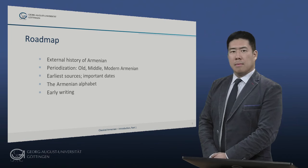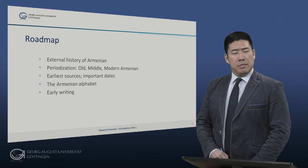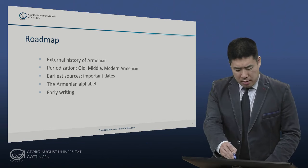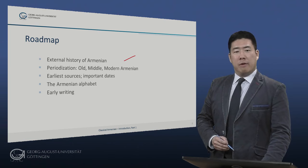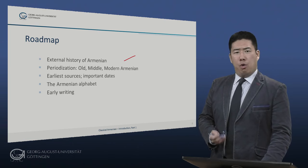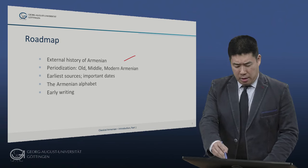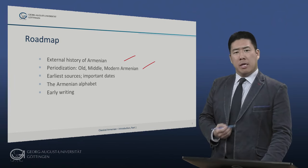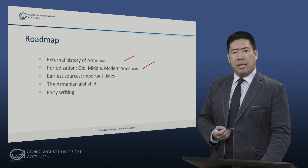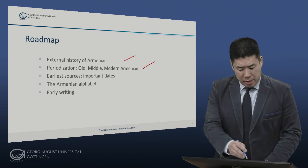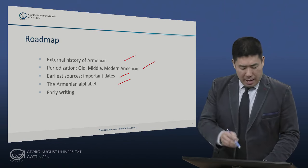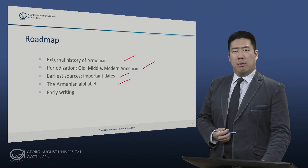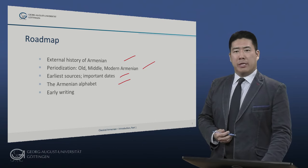Let's begin with a roadmap. I will begin with the external history of Armenian, followed by the periodization of the language into Old, Middle, and Modern Armenian. Daniel will then present some of the earliest sources on the Armenians, including important dates, and then he will present the Armenian alphabet and examples of early writing. I will conclude with another example of early writing in Armenian.